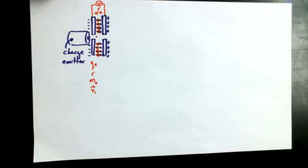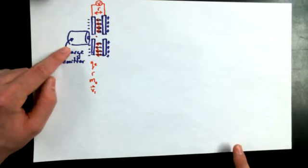Alright, so as previous, we've got the situation where we've got some sort of a charge emitter, we'll call it an anode cathode type of device.